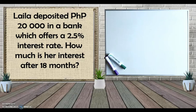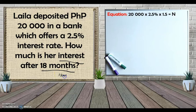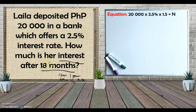Last example: Lila deposited 20,000 pesos in a bank which offers a 2.5% interest rate. How much is her interest after 18 months? We multiply the principal (20,000) times the rate (2.5%) times the time. The time given is 18 months, but since the formula requires years, we convert: 12 months equals 1 year, and 6 more months is half a year (0.5), so 18 months equals 1.5 years. Be careful not to use 18 directly — the unit must be in years.